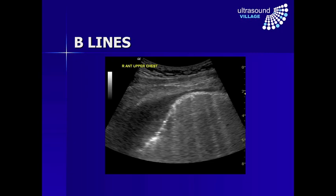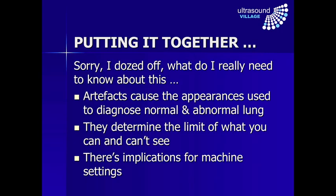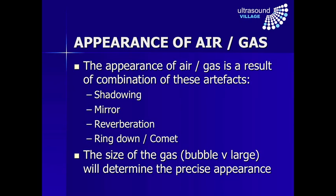So those are the main artifacts we're going to see when ultrasounding the lung. What do you really need to know? Artifacts cause the appearances we use to diagnose both normal and abnormal lung. In addition, they determine the limit of what you can and can't see. Finally, there are also implications for machine settings.